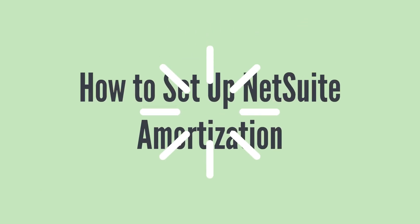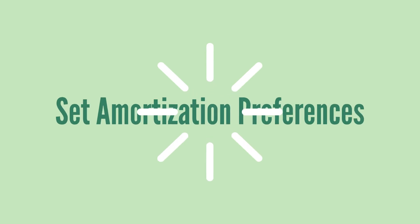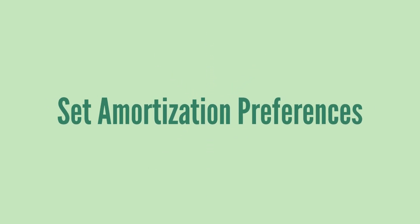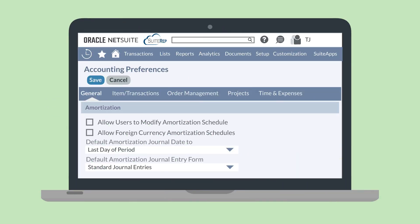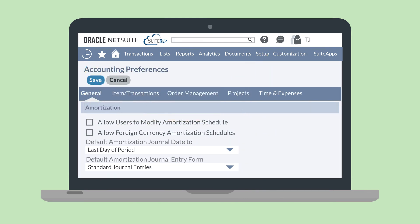After enabling the NetSuite amortization feature, there are a couple other things you need to do to set everything up for amortization. First, you'll need to set your preferences for amortization. You'll find these preferences in Setup, Accounting, Accounting Preferences, under the General sub-tab. Some of the amortization-specific preferences include things like Allow Users to Modify Amortization Schedules, Allow Foreign Currency Amortization Schedules, and Default Amortization Journal Entry Form.